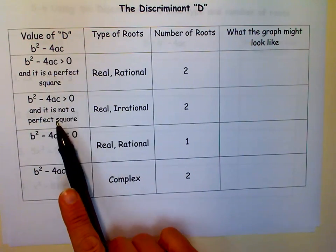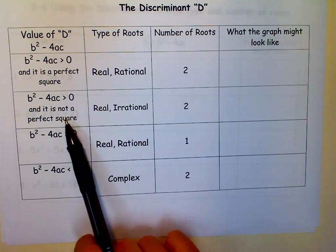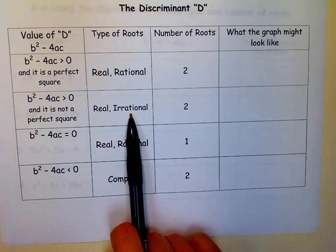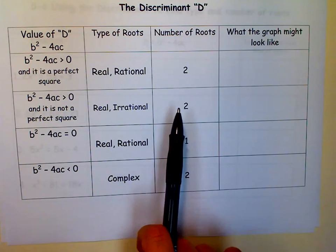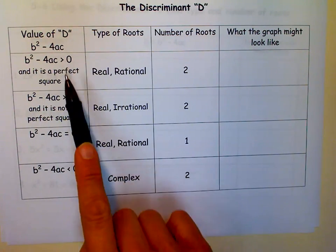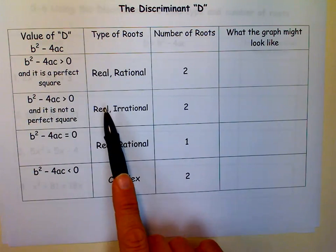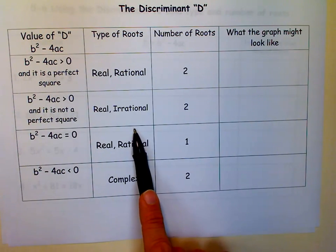If it's positive and it's not a perfect square, then that's when you'll get like the square root of 3s and square root of 17s and stuff like that. They'll be real, but they'll be irrational, and there will still be two. So when this discriminant is positive, you have two real roots, but sometimes they're rational and sometimes they're irrational.